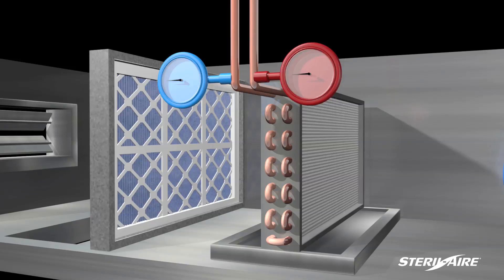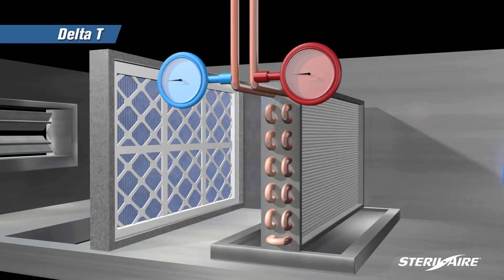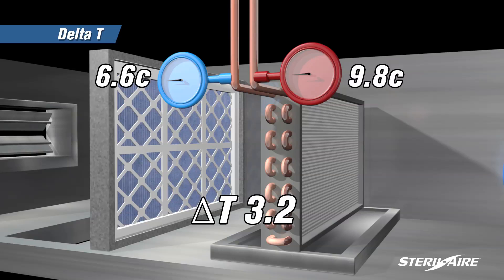The efficiency of the coil can easily be measured by checking the delta T of the coolant, entering and leaving the coil. Before sterile air, the chilled water supply temperature was 6.6 Celsius, and the return 9.8, with a delta T of 3.2.